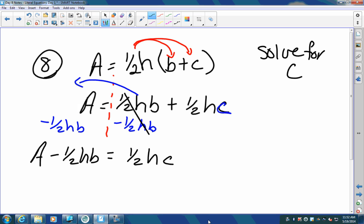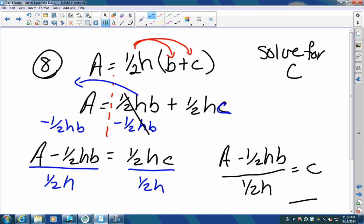Well, now you divide by one half H. So we have A minus one half H B all divided by one half H and that equals C. Now you cannot eliminate these one halves. I cross them out in this H because there's a minus sign right here. It makes it different. So we'll leave it like this for right now.